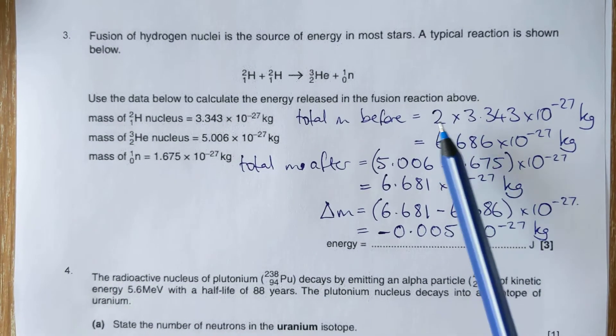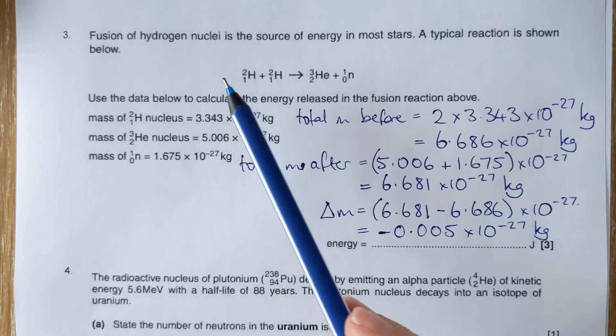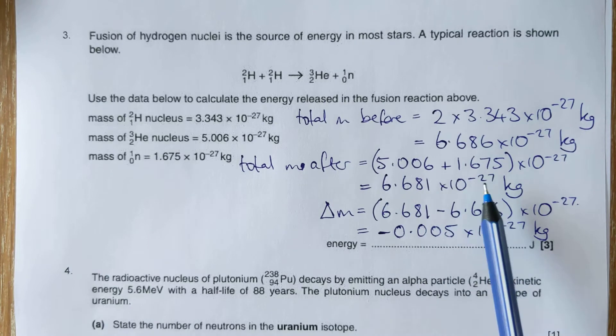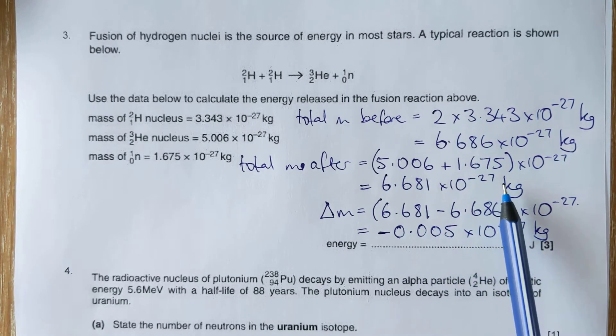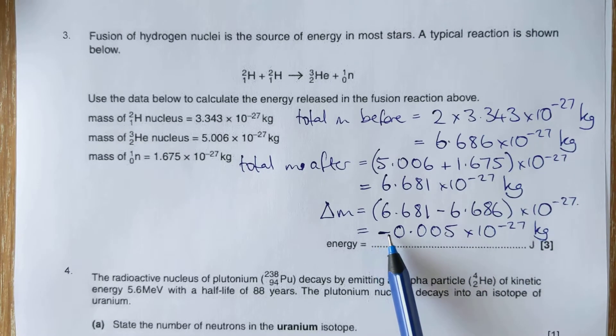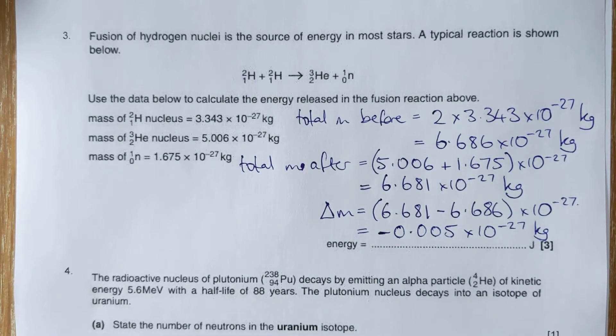So there's the total mass of the two hydrogen nuclei. There's the total mass of the helium nucleus and the neutron. And there's the change in mass through the interaction. Notice it's minus because mass has been lost, which is what we're expecting.